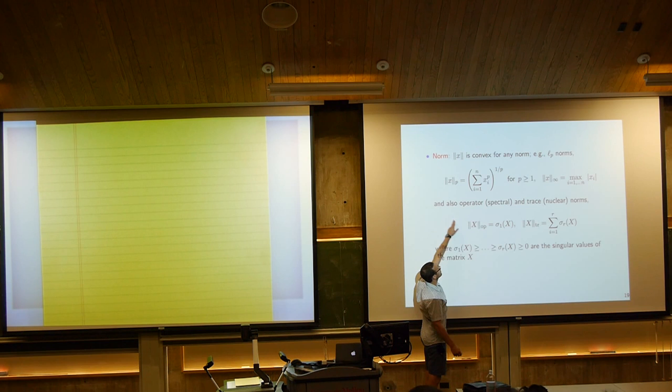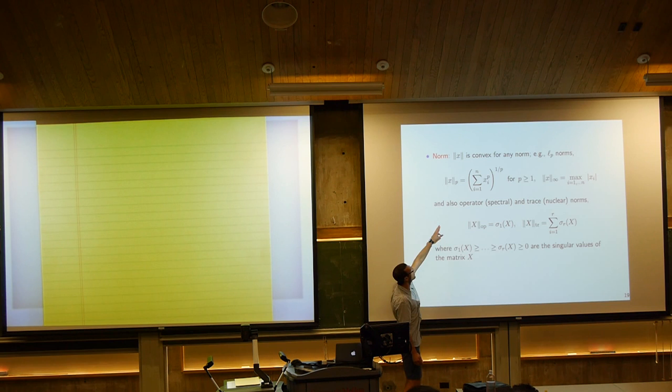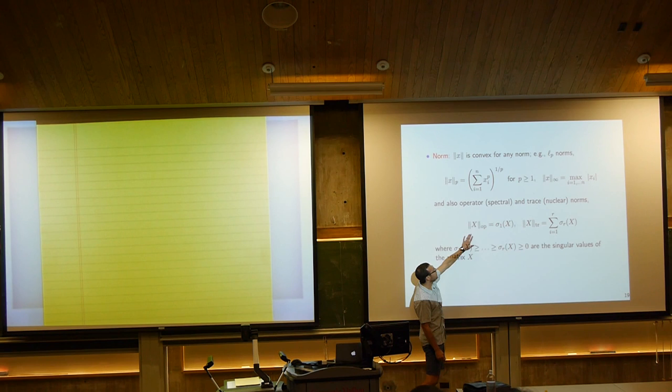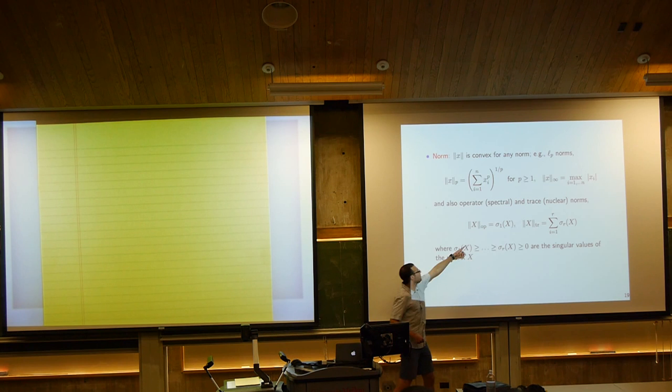I talked a bit about LP norms — we kind of skipped over these, but let me spend another few seconds introducing them because they'll become important later. We all know LP norms and the L-infinity norm, which is the limit of the LP norms as P gets larger. This guy right here is called the operator norm on a matrix X, defined as the largest singular value of X.